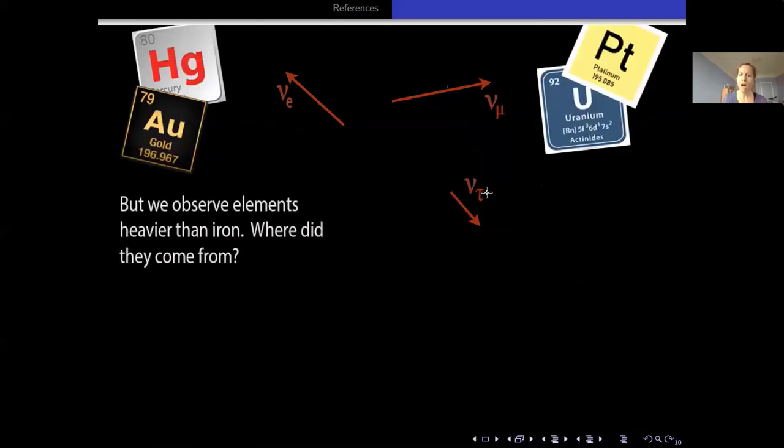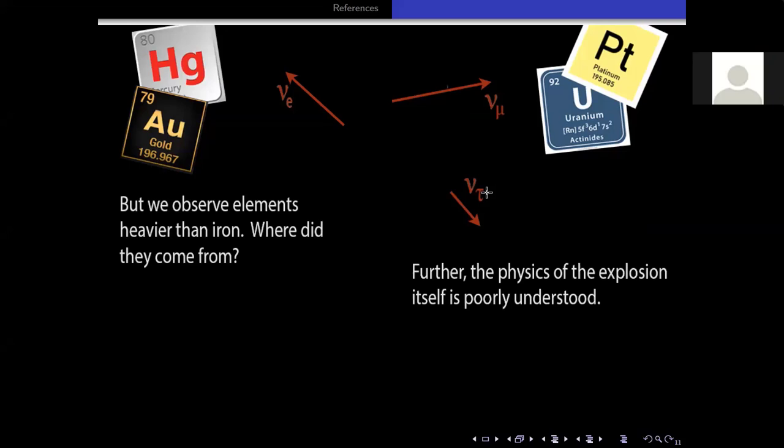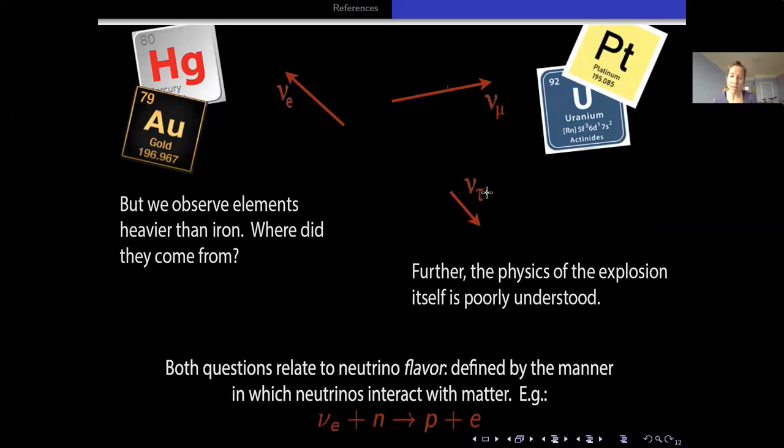But we look around and see there are elements heavier than iron - mercury, gold, plutonium, uranium. Where did they come from? The physics of these explosions is not well understood, and both questions relate to neutrino flavor. Flavor defines the manner in which neutrinos interact with matter in this expanding cloud. For example, an electron flavor neutrino captures on a neutron and produces a proton and an electron.